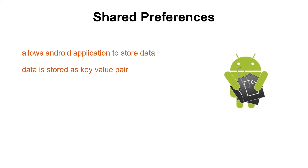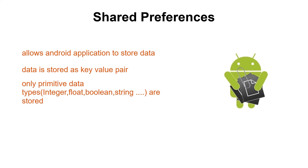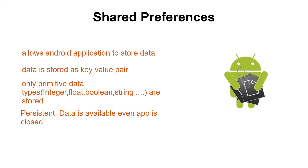Shared Preferences only stores primitive data types like integer, string, double, float, or boolean. If you want to store object type data, please consider SQLite database. Shared Preferences is persistent, which means it stores data onto the disk of the Android phone so that even if the app gets closed, the data still remains stored and ready to use. Let's see how to use Shared Preferences to store the highest score in our app.